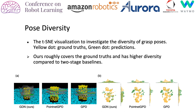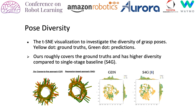Here is the qualitative result of pose diversity. Our method roughly covers the ground truth and has higher diversity compared to all baselines. Notably, our method can even detect grasps behind occluded parts while the other single-stage method cannot.